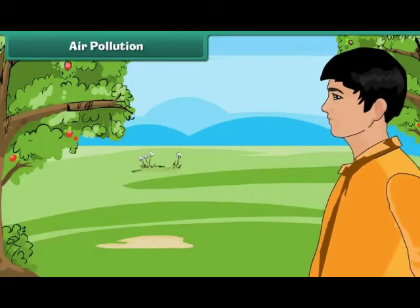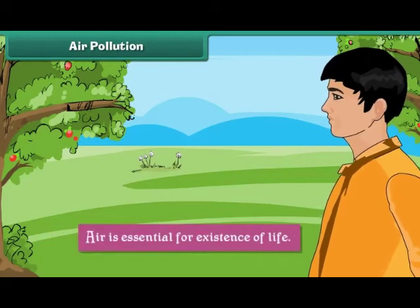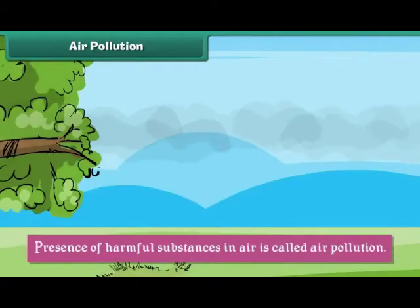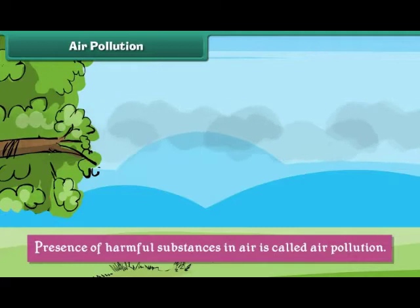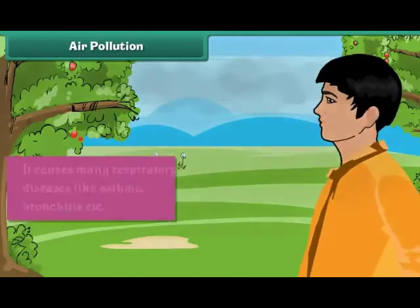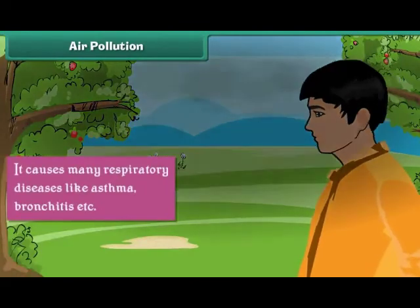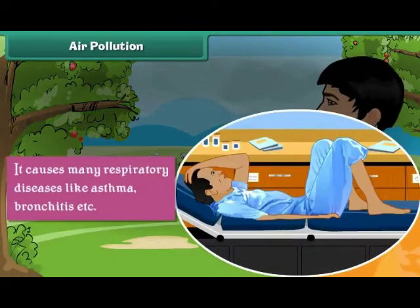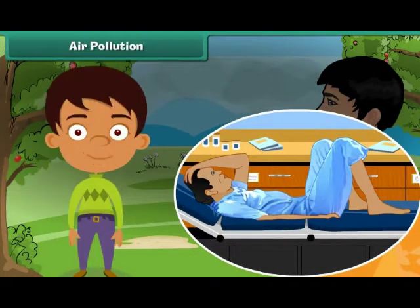Air Pollution. Air is essential for existence of life. Presence of harmful substances in air is called air pollution. Air pollution is caused by smoke emitted by industries, vehicles, and burning of plastic. It causes many respiratory diseases like asthma, bronchitis etc. We can stop air pollution by reducing the smoke released in the air.